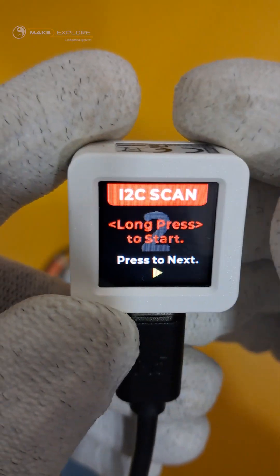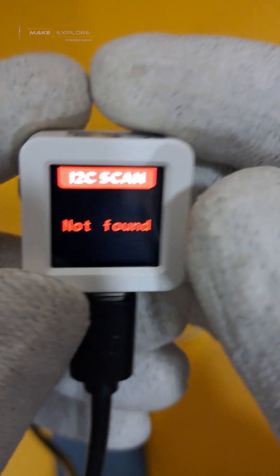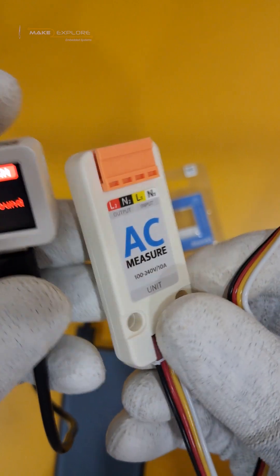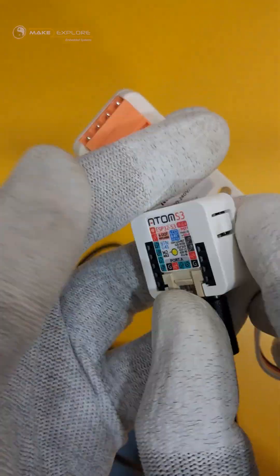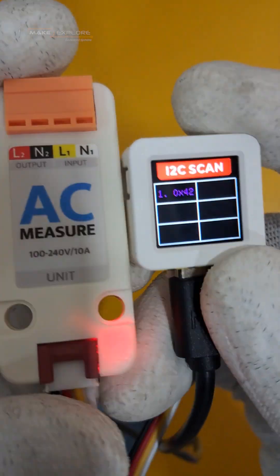The I2C scan. Let's see. It says not found because no I2C device is connected. Let's connect the module we have seen earlier. And it displays the device's I2C address.